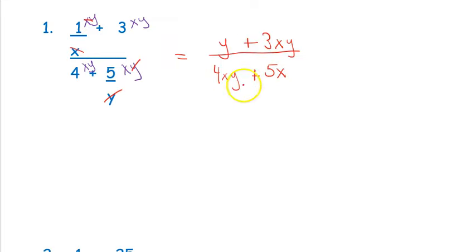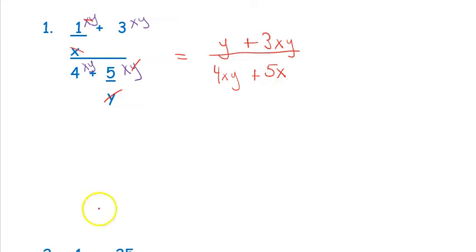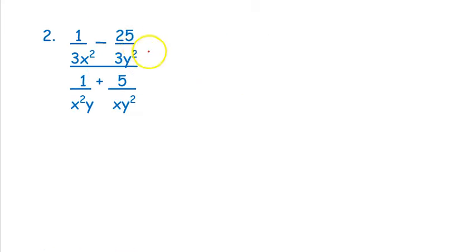Sometimes at this step you can factor and cancel things out. On the top you have a GCF of y, giving you y(1 + 3x). On the bottom you have a GCF of x, giving you x(4y + 5). But that doesn't help us because we still can't cancel anything, so I'm just going to leave it as is — taking out the GCF doesn't help here.